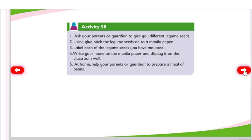Activity 58: Ask your parent or guardian to give you different legume seeds. Using glue, stick the legume seeds onto a manila paper. Label each of the legume seeds you have mounted. Write your name on the manila paper and display it on the classroom wall. At home, help your parents or guardian to prepare a meal of beans.